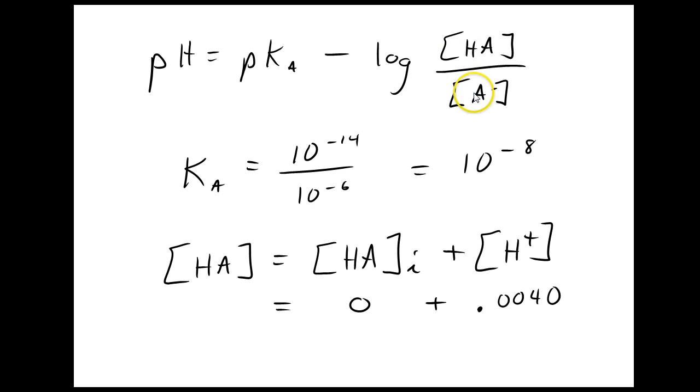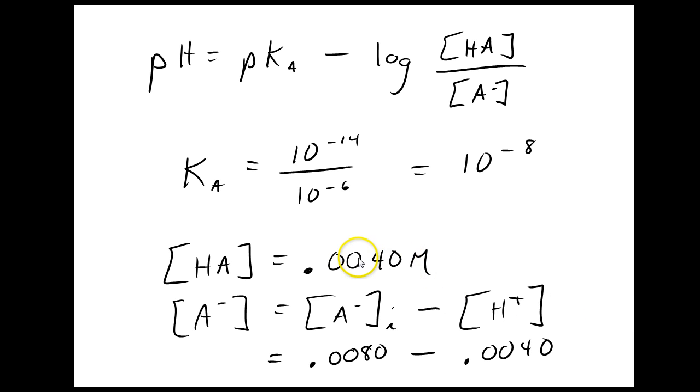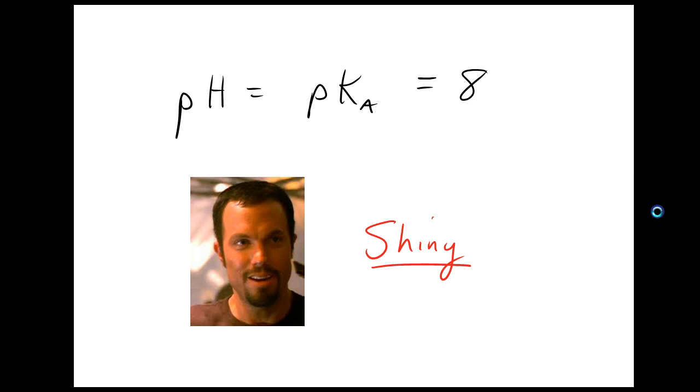So here's my Henderson-Hasselbalch equation. I need the Ka value. So I get that. I take KW divided by KB. And then I'm going to adjust these concentrations. HA is going to be my initial HA, which is 0, because remember this is a weak base being titrated with a strong acid, plus whatever H plus I added, which is going to react with A minus and produce HA. So that's my 0.004 molar. And there's my answer. My A minus, similarly, I'm going to have to adjust it. I'm starting with 0.008 molar A minus, and some of it's reacting with H plus 0.004 molar. So I end up with 0.004 molar for the A minus as well. Now, when I put these terms into the Henderson-Hasselbalch equation, I'm just going to have the log of 1, which is 0. So the pH is just equal to the pKa halfway to equivalence.